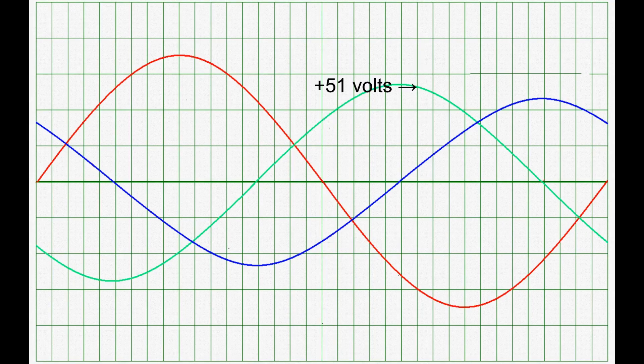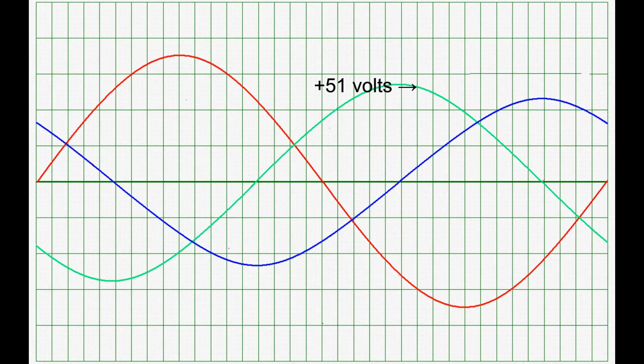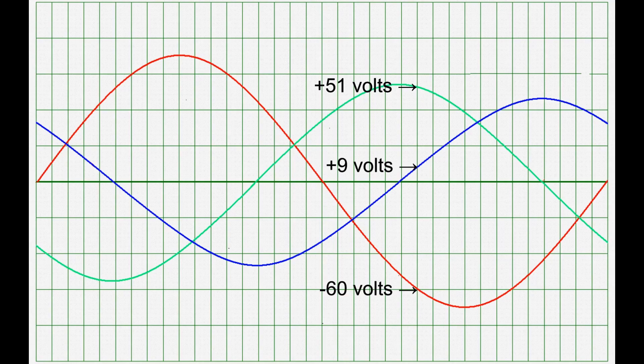Let's take one last look at another moment in time. Here the resistor voltage is plus 51 volts. The capacitor voltage is 9 volts, and the source voltage is minus 60 volts. So 51 plus 9 minus 60 equals zero.